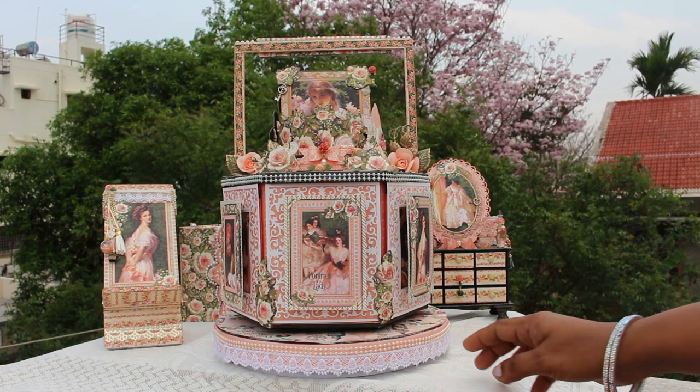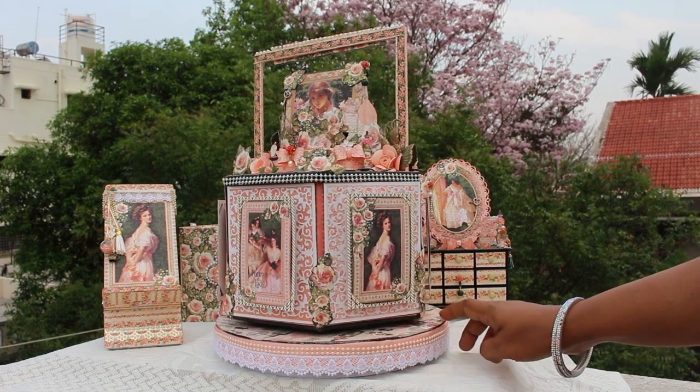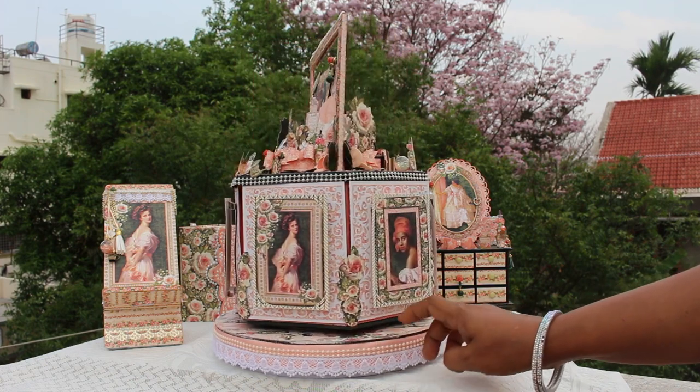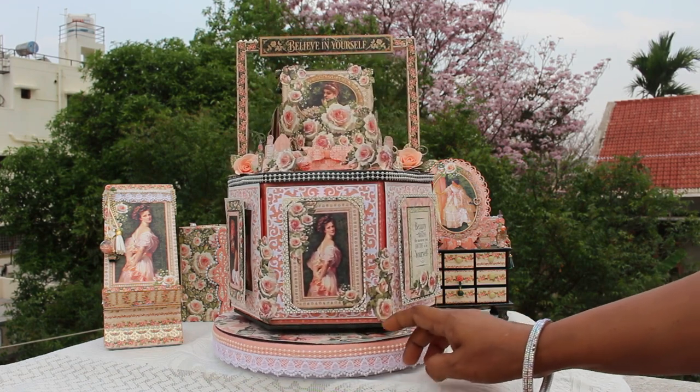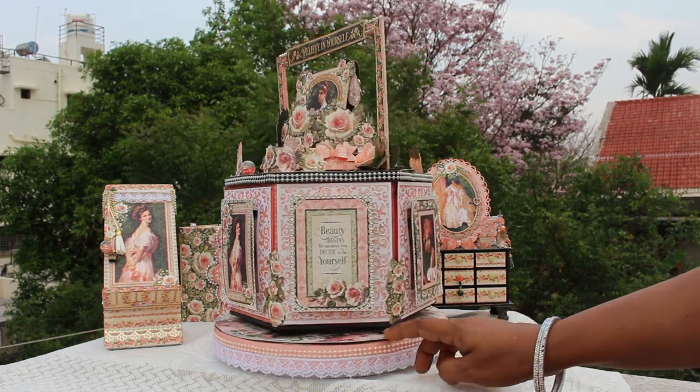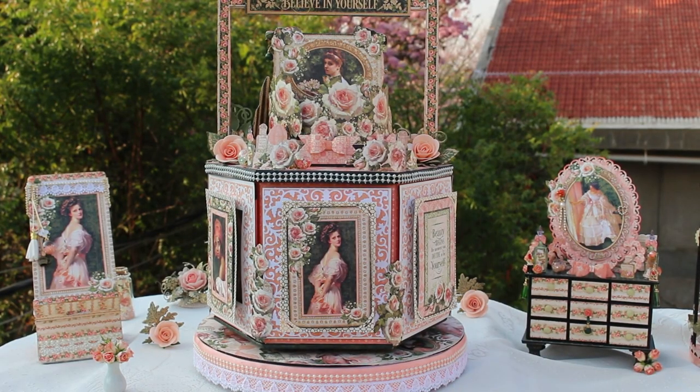Hi Crafters! Sharing a rotating organizer with a double photo display unit. This project was made using Graphic 45 papers and chipboard and it's quite sturdy and can hold quite a bit of weight. It is in the shape of a hexagon and has a double rotating mechanism.